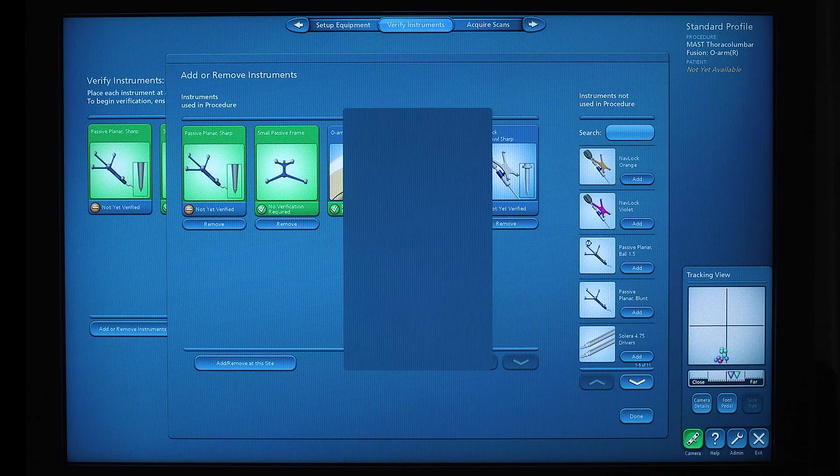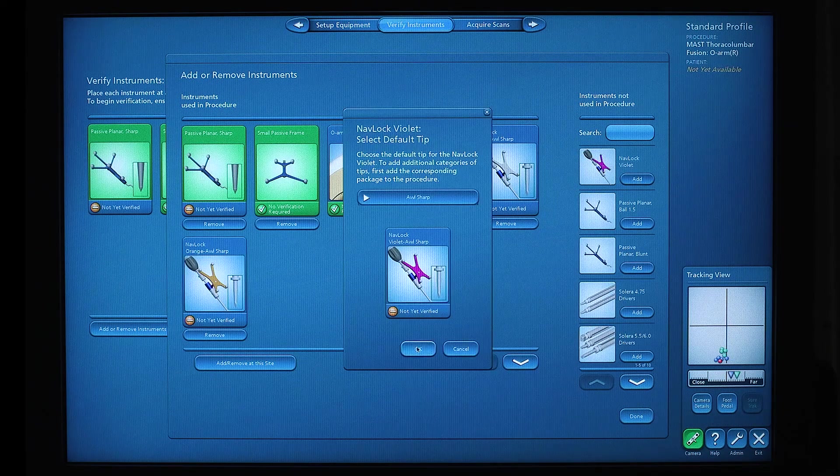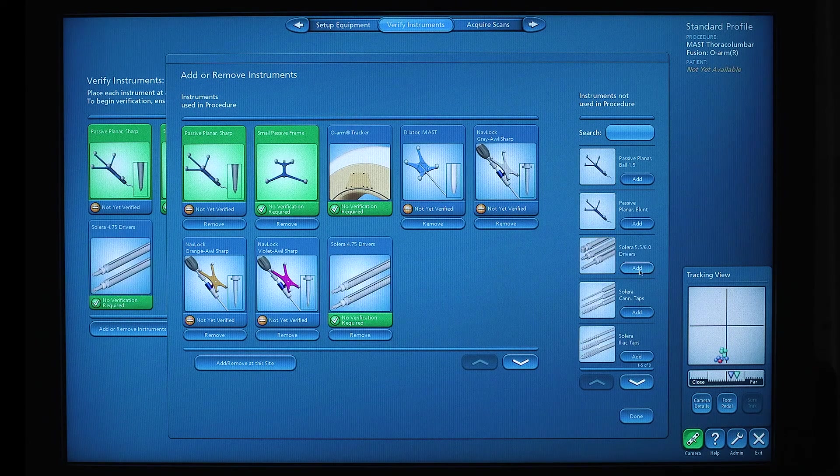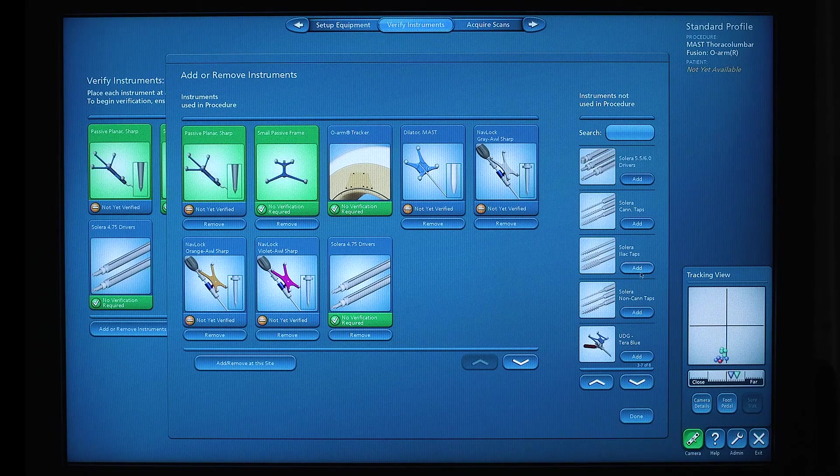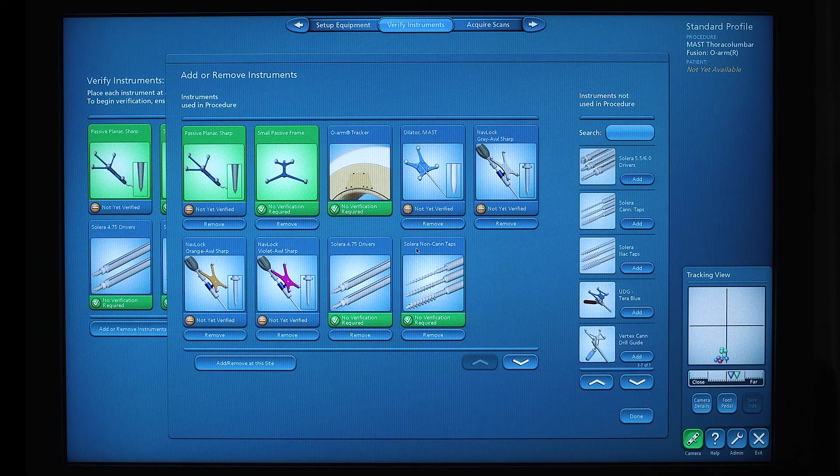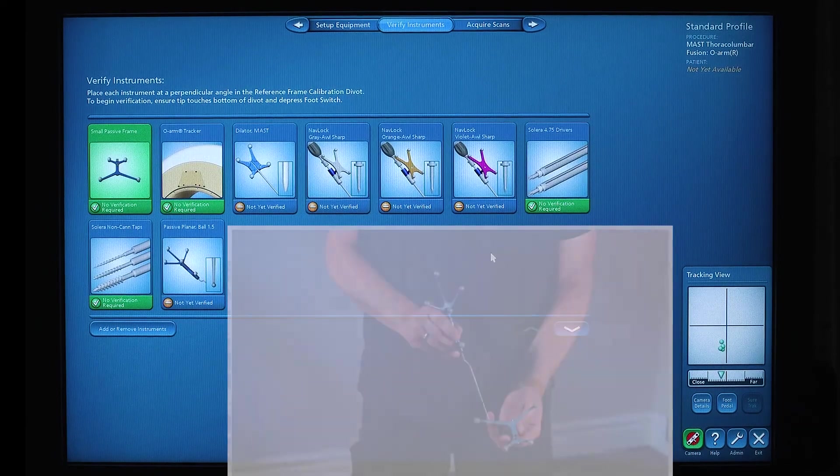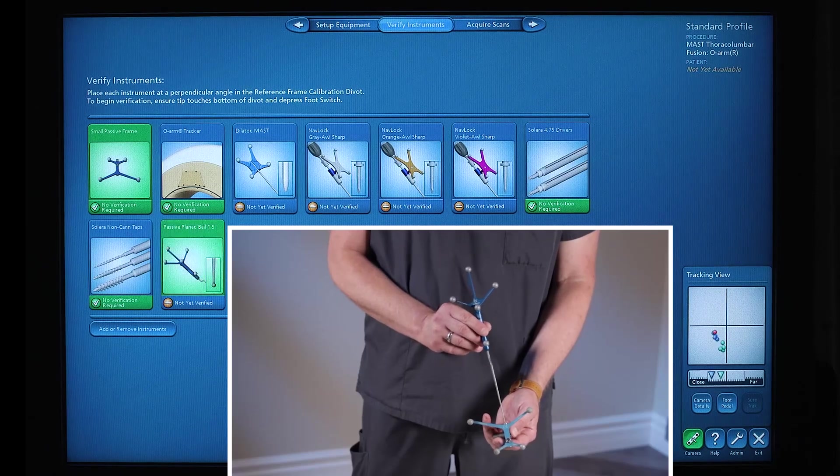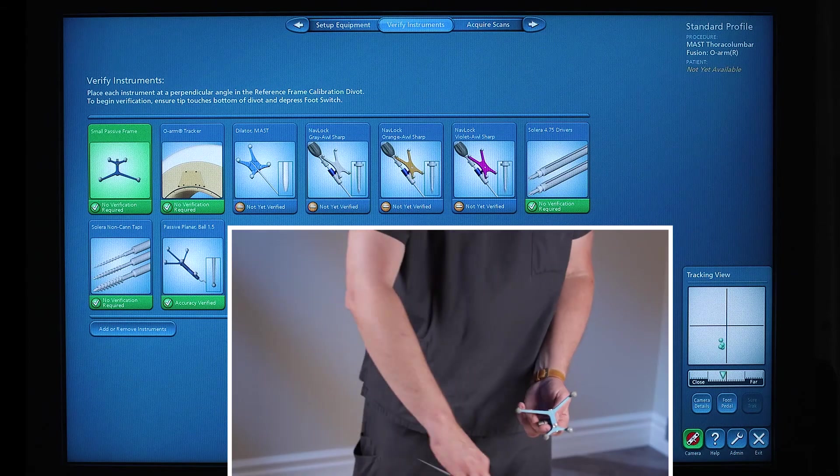We'll also include the orange and violet. We'll also utilize the Solera drivers and the Solera solid taps, non-cannulated. With these now installed, we need to verify the instrumentation. We're going to verify each probe by placing the tip of the probe in the divot. Show it to the camera, and we'll hear a confirmation tone indicating that each probe is verified.